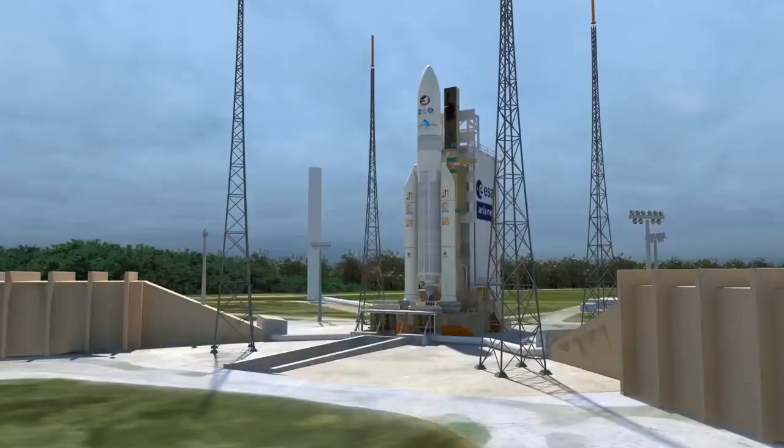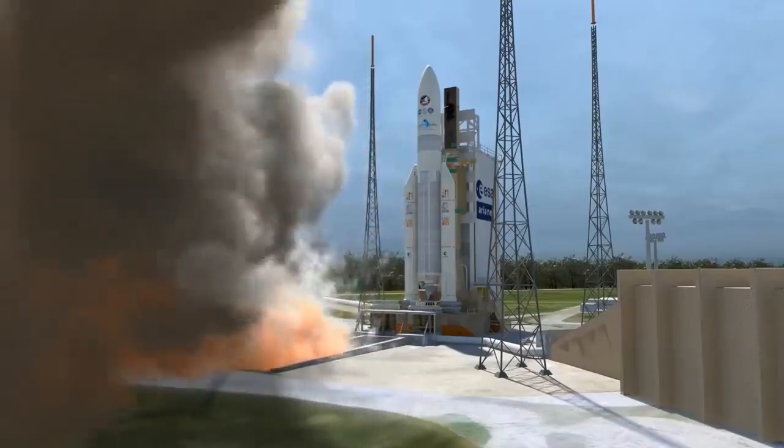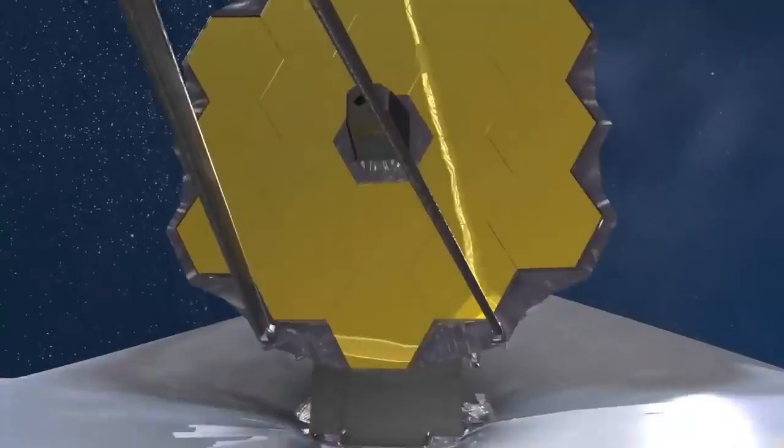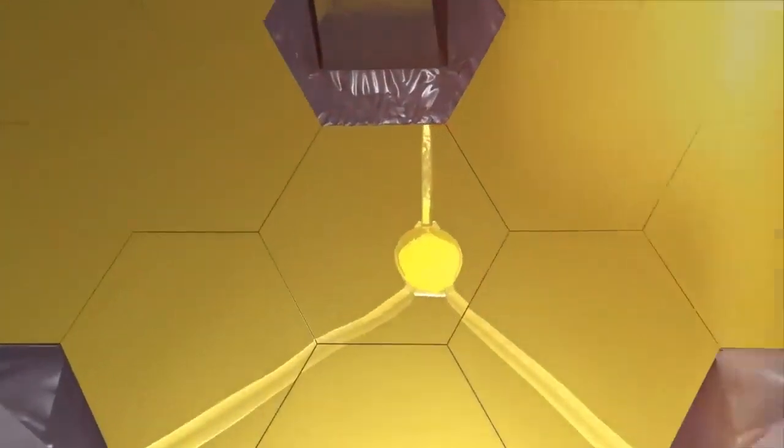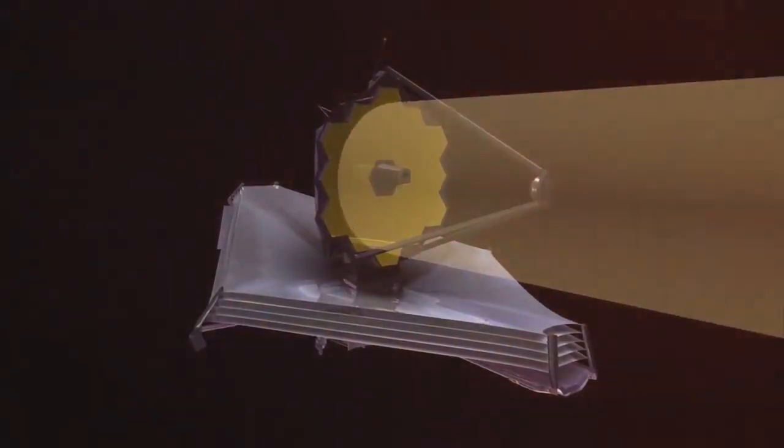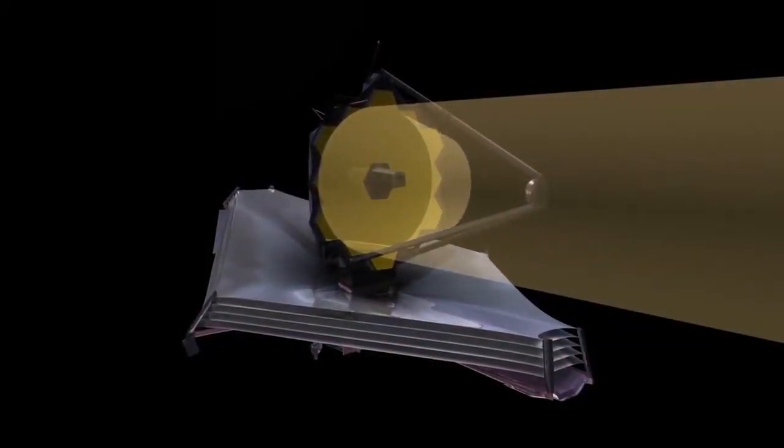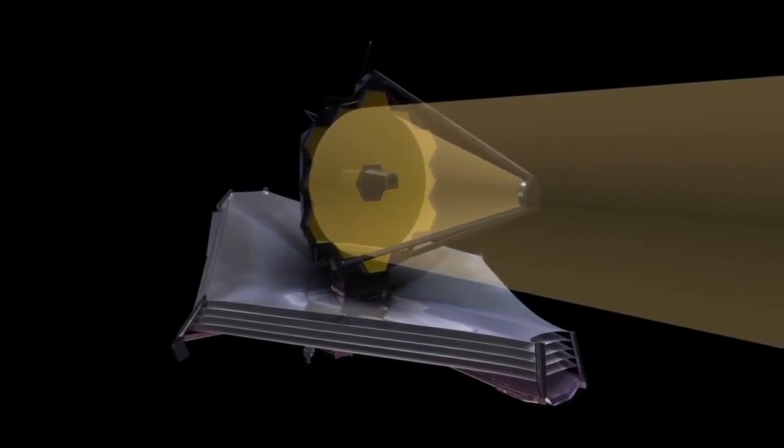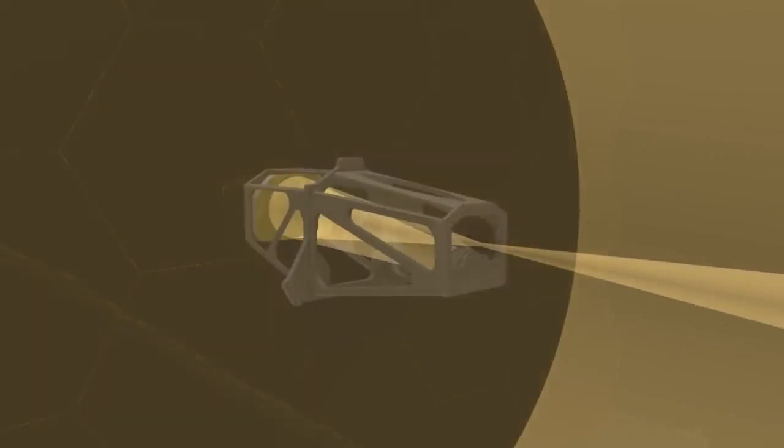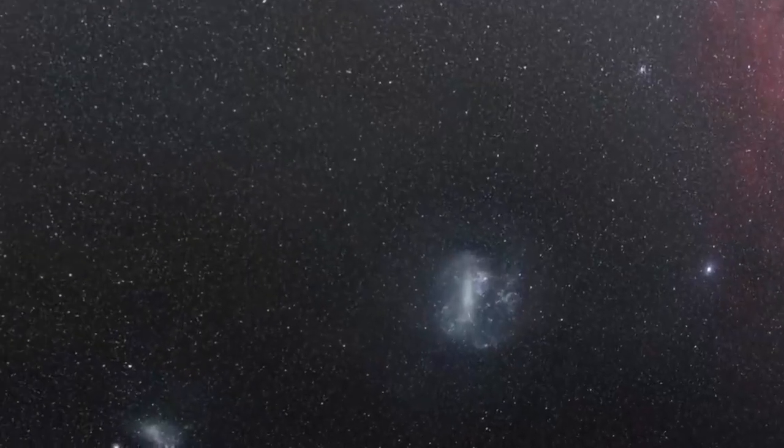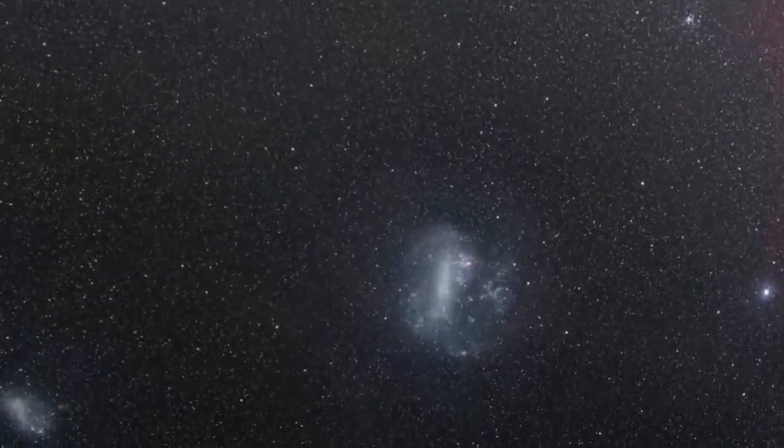We aligned and focused the telescope on a star and the performance is beating expectations, says Ritva Keski-Kuha, JWST's deputy optical telescope element manager. The JWST team set out more than 20 years ago to build the most powerful telescope ever put in space, and they came up with an optical design to meet the science goals, says Thomas Zurbuchen, associate administrator for NASA's science mission directorate.